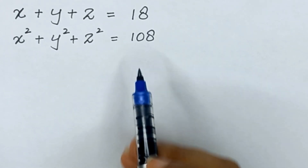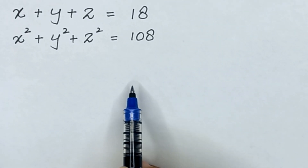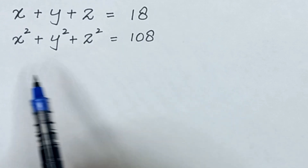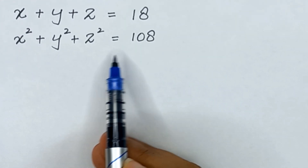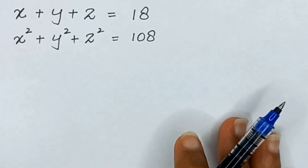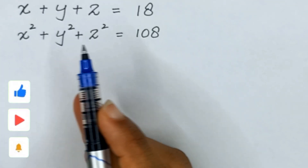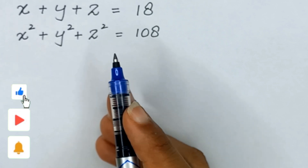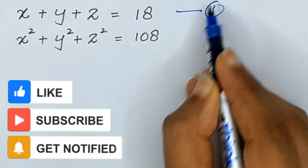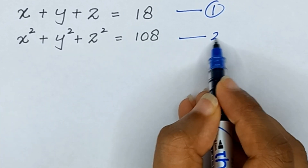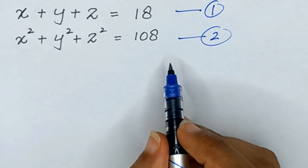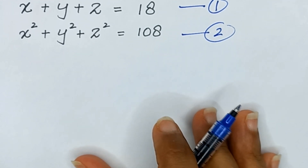Hello friends, here we have a system of equations: x plus y plus z is equal to 18, and x squared plus y squared plus z squared is equal to 108. I'm going to solve for x, y, and z. The first equation is x plus y plus z equals 18, and the second equation is x squared plus y squared plus z squared equals 108.